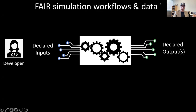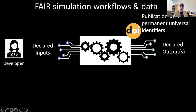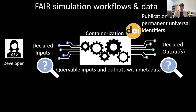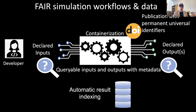How do we publish these models and give them permanent identifiers? How can we make the inputs, outputs, requirements, and services queryable so that models and workflows are discoverable? How do we containerize them so they run exactly the same way year after year? And how can we make the results of these models automatically available in a FAIR database?